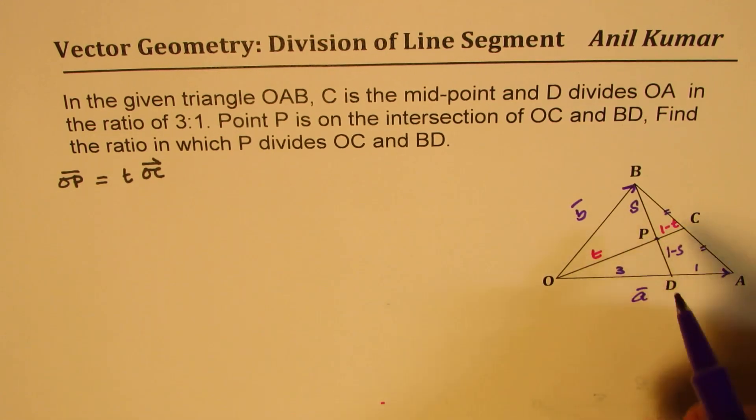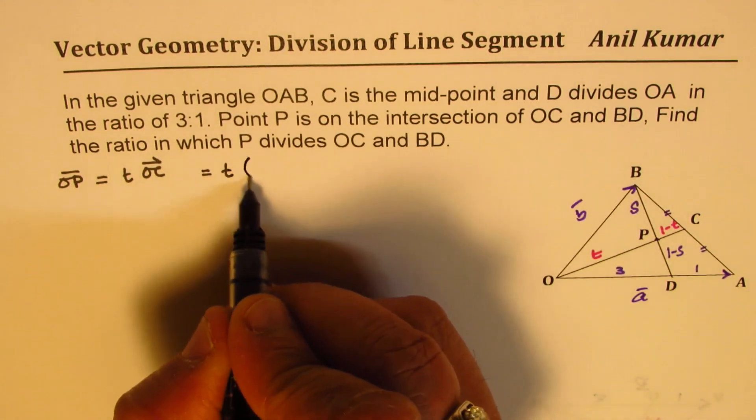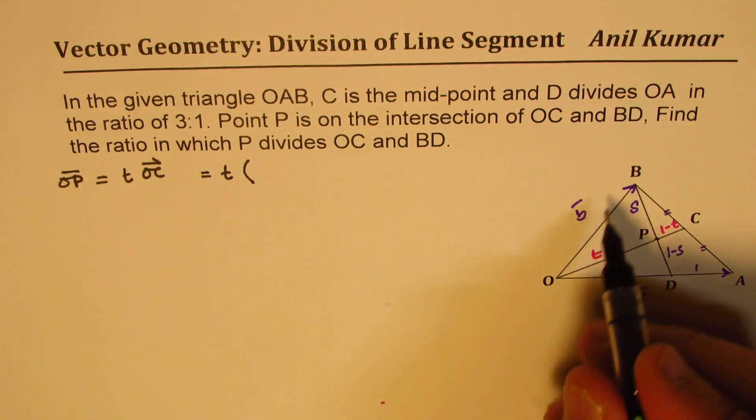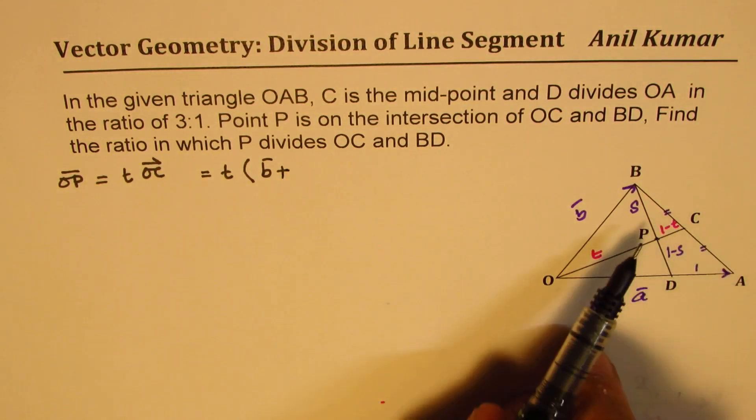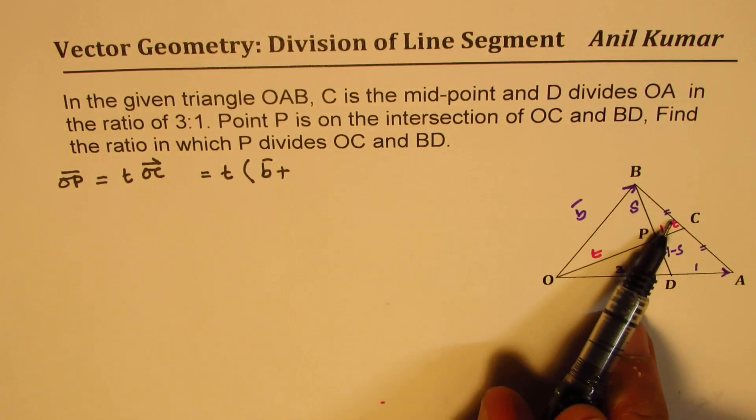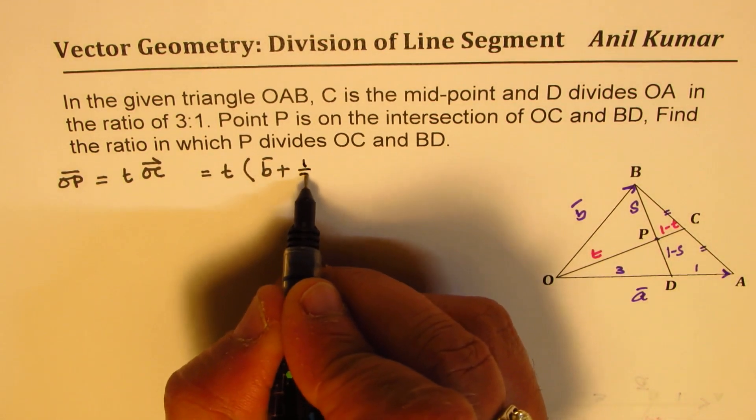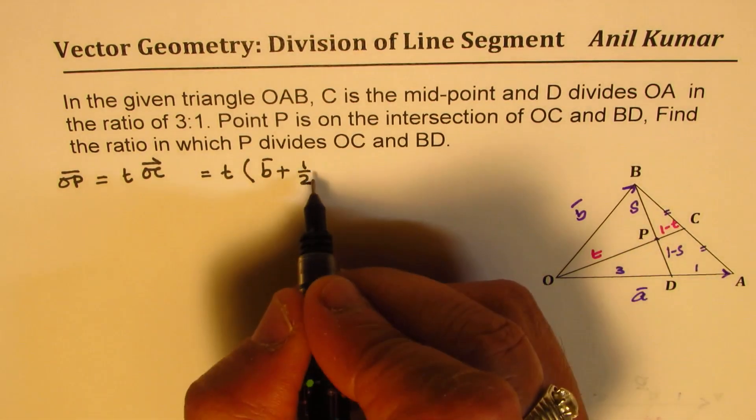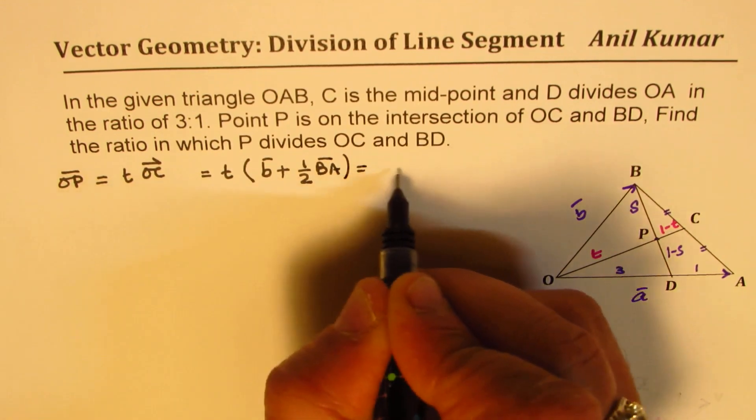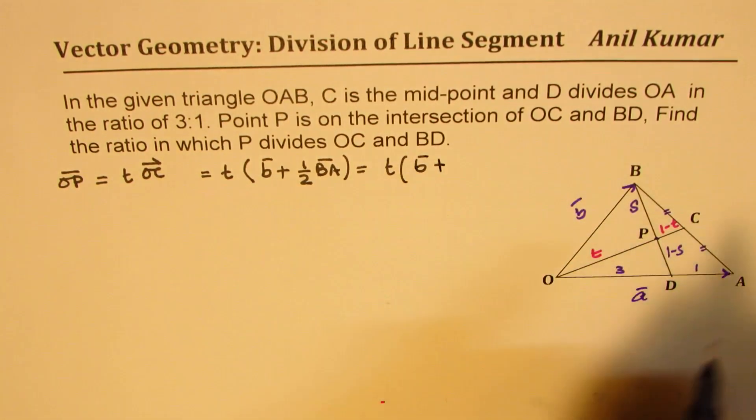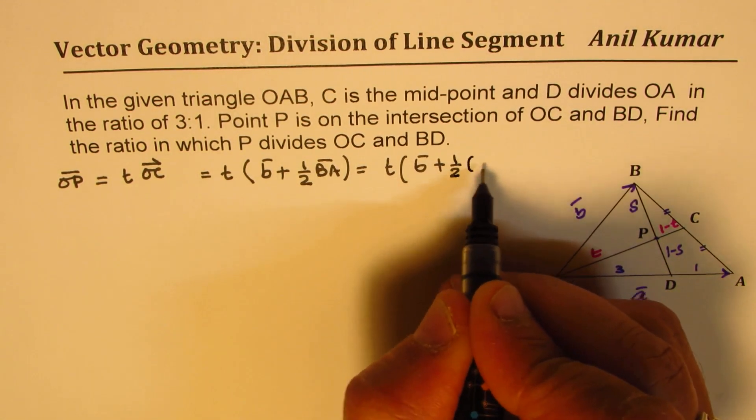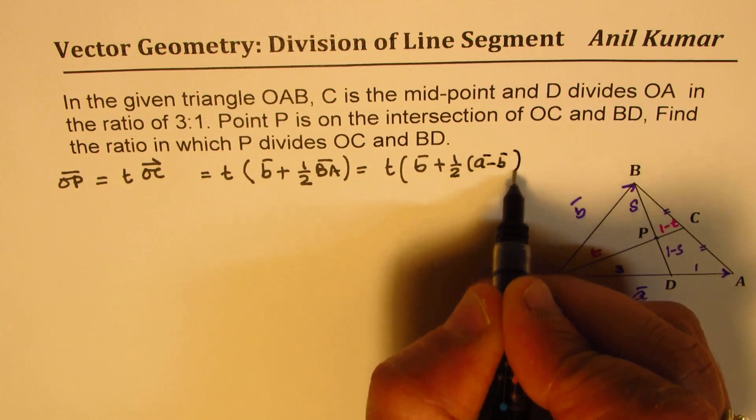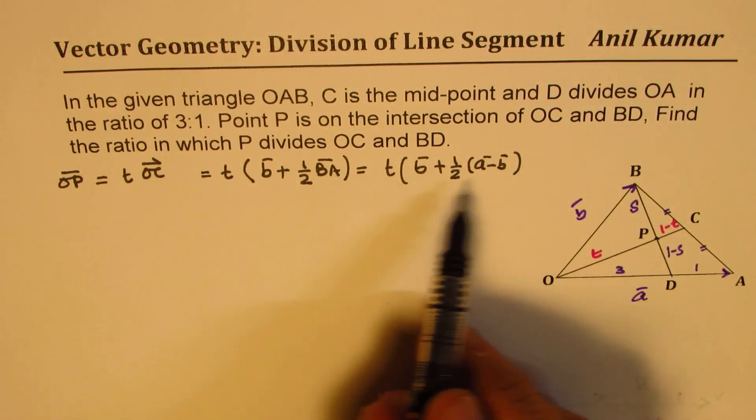So, now what is OC? OC can be written as O to B plus B to C. So, we have written vector B plus half of, because this is half of BA. So, it is half of B to A. Now, what is B to A? B to A is A minus B, correct? All right.